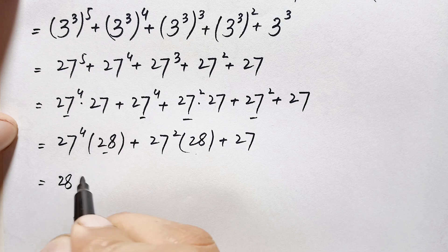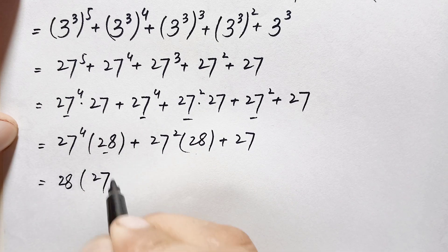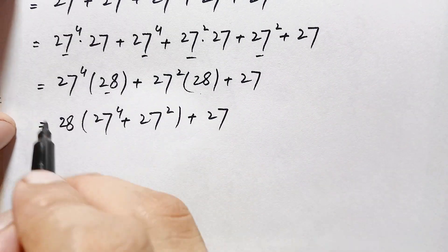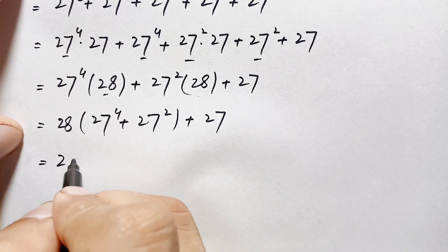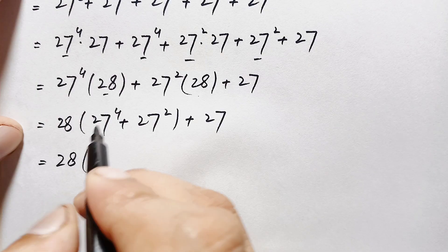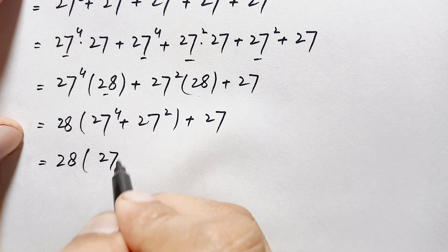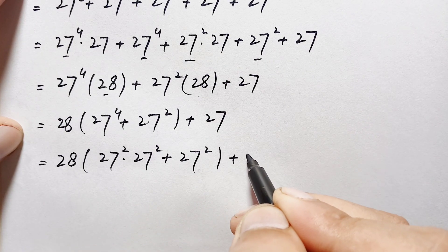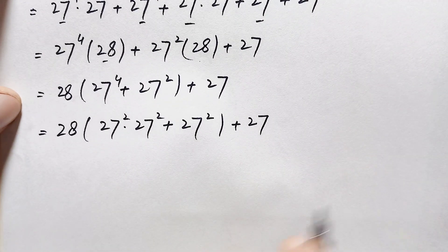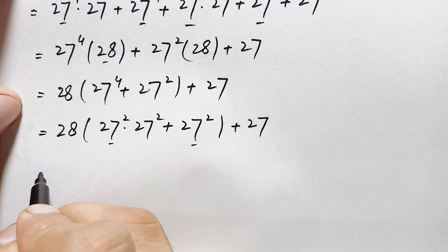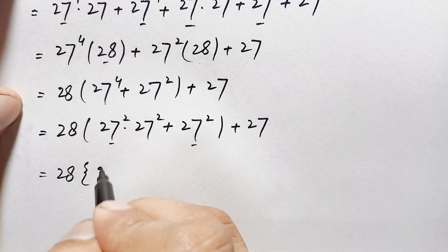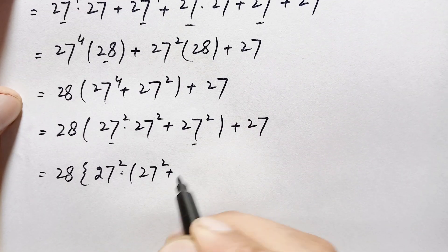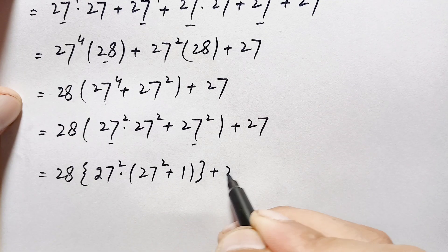Since 28 is common, we factor it out: 28 times the quantity 27 to the power 4 plus 27 squared plus 27. We then rewrite 27 to the power 4 as 27 squared times 27 squared, and factor out 27 squared from the bracket, giving 28 times 27 squared times the quantity 27 squared plus 1, plus 27.